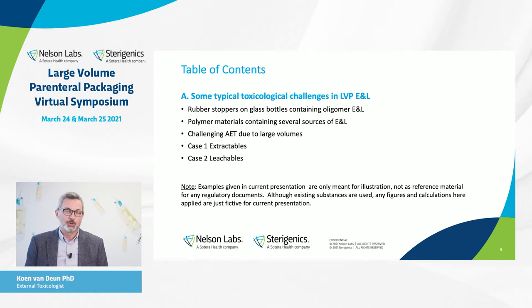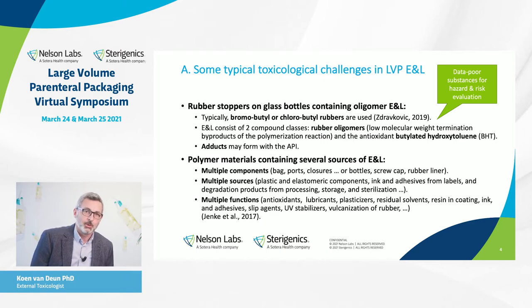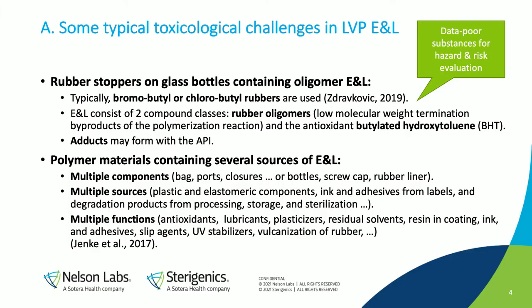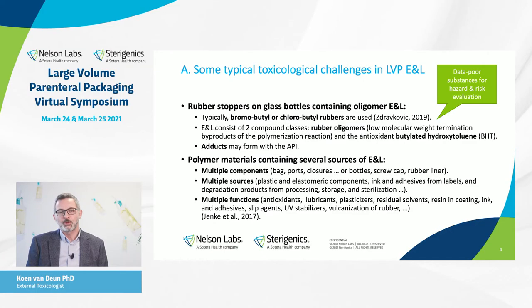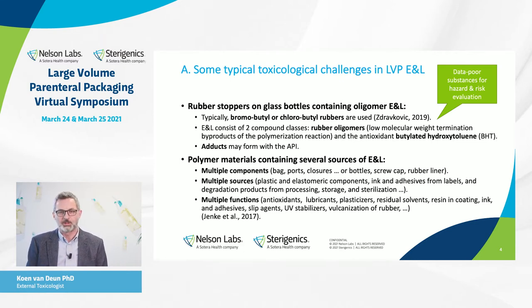Let's start with some typical examples with rubber stoppers used in bottles, but also polymer materials which are used as plastic bags or other kinds of products. We will also have a look at the challenging AET, or analytical evaluation threshold. Rubber stoppers used on glass bottles for large volumes will lead to typical extractables or leachables, mostly based on the bromobutyl or chlorobutyl rubbers used in these stoppers. The typical extractables are the rubber oligomers — either halogenated or not halogenated. There are also other products added, like antioxidants; a typical one is butylated hydroxytoluene, which I will also use as an example.